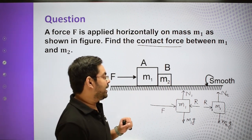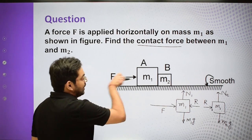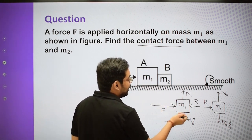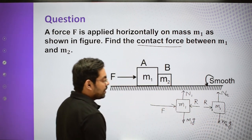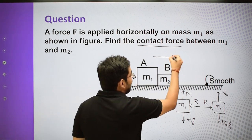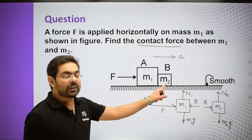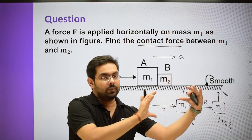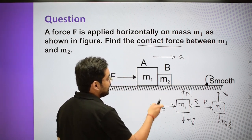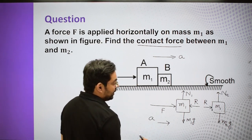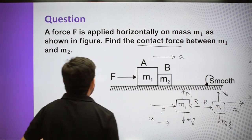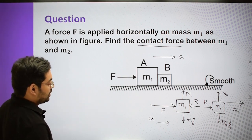The force between the two blocks is an action-reaction pair. I call it R force — the contact force. Both blocks are in contact and will move together, so their acceleration will be the same in the right direction. We can observe that F (applied rightward on M1) must be greater than R (which acts leftward on M1) for the system to accelerate rightward.